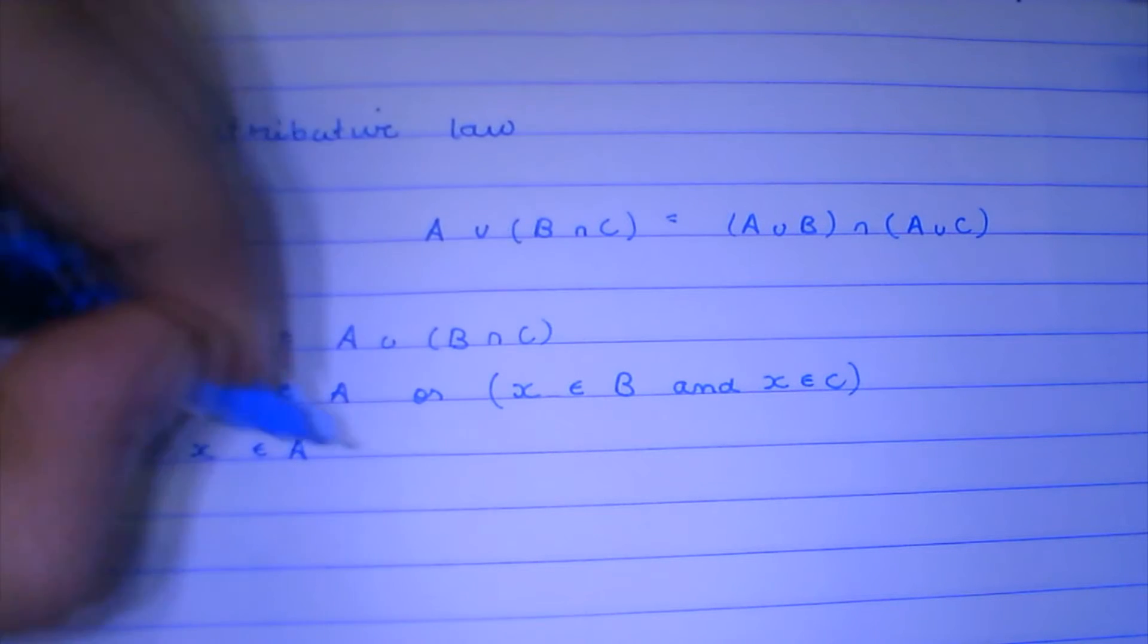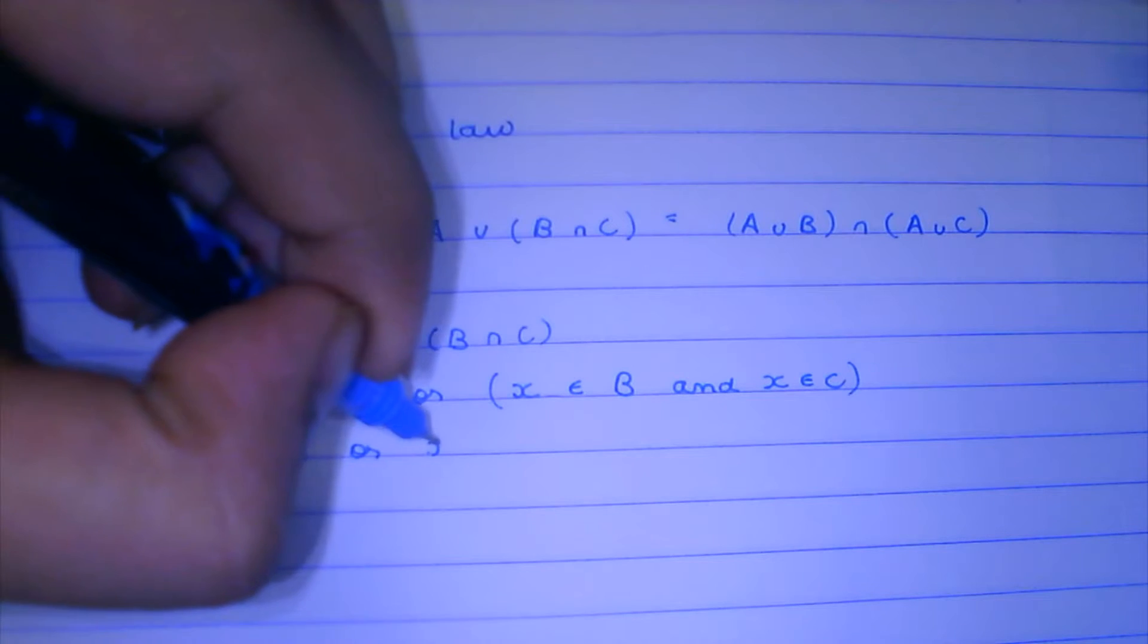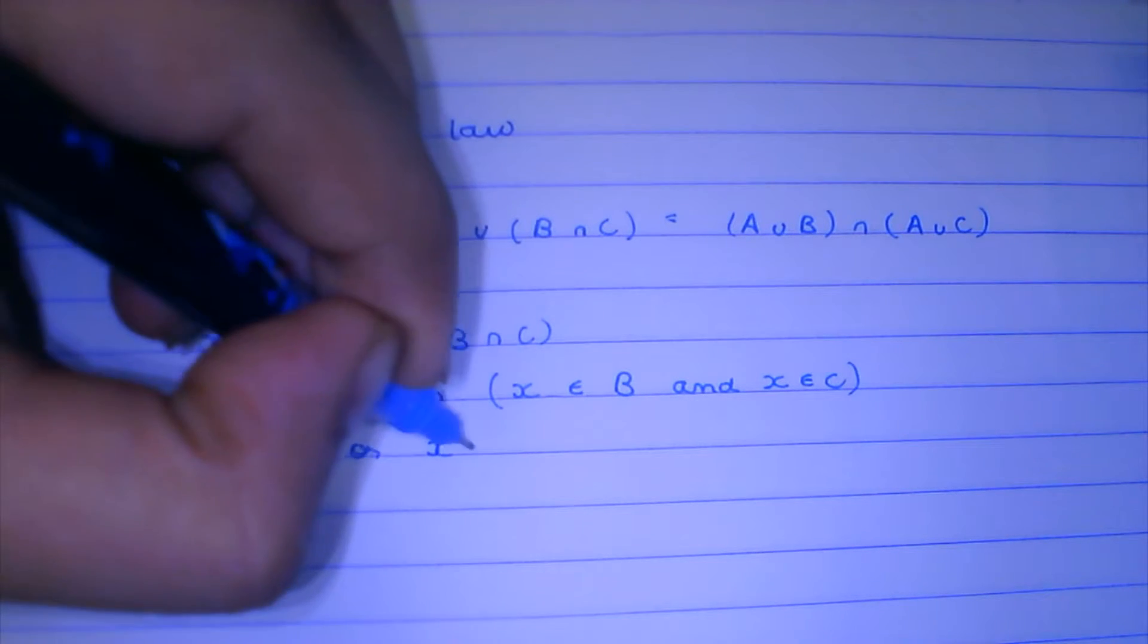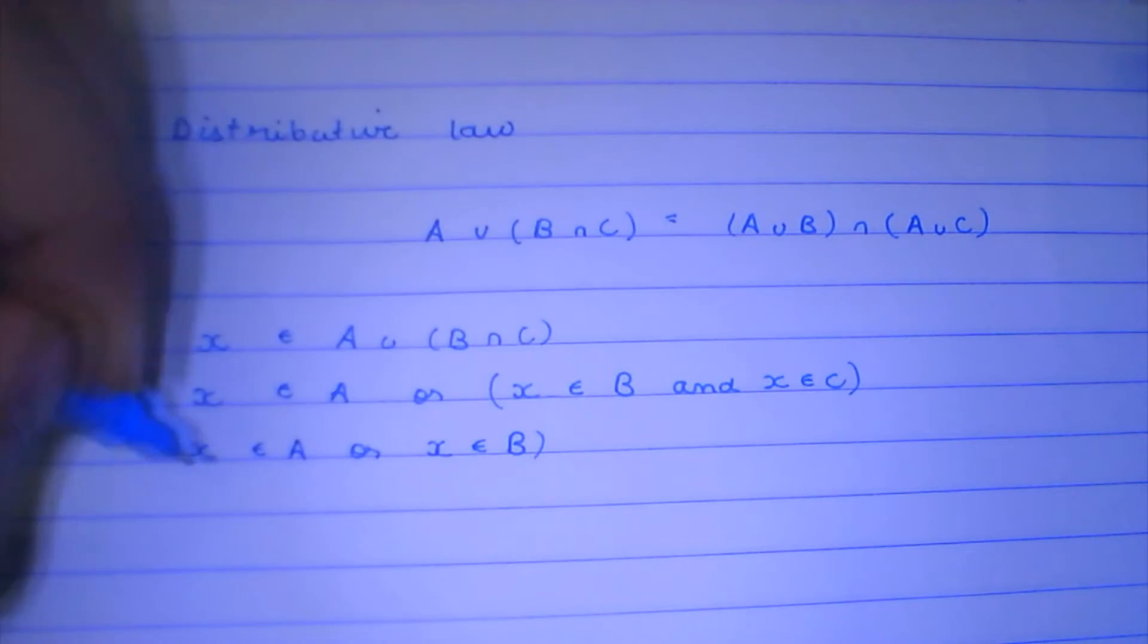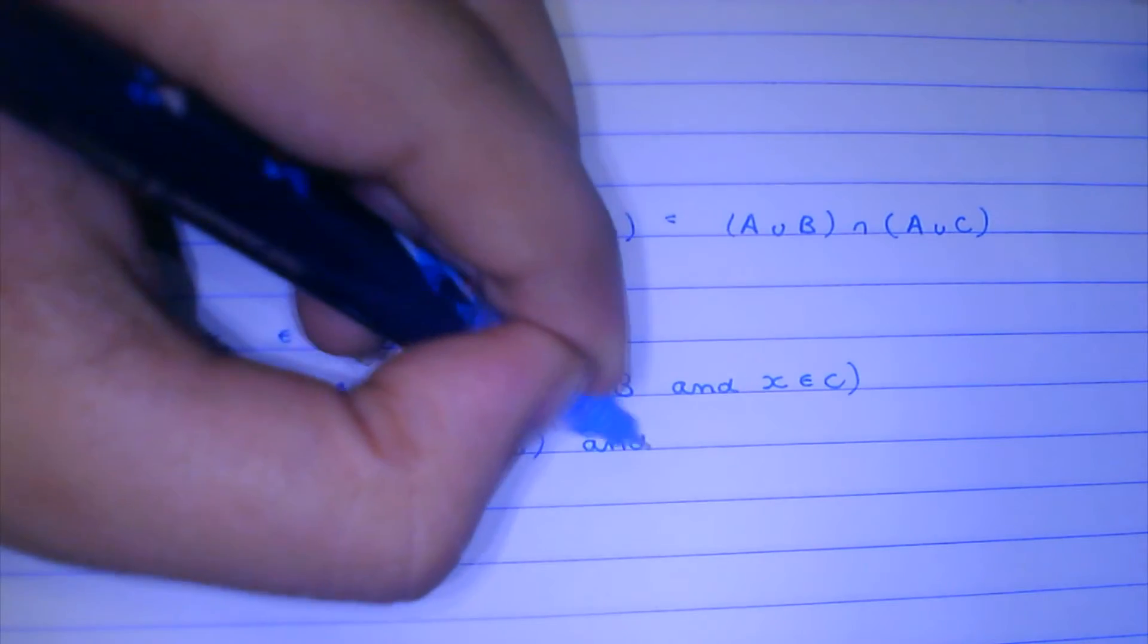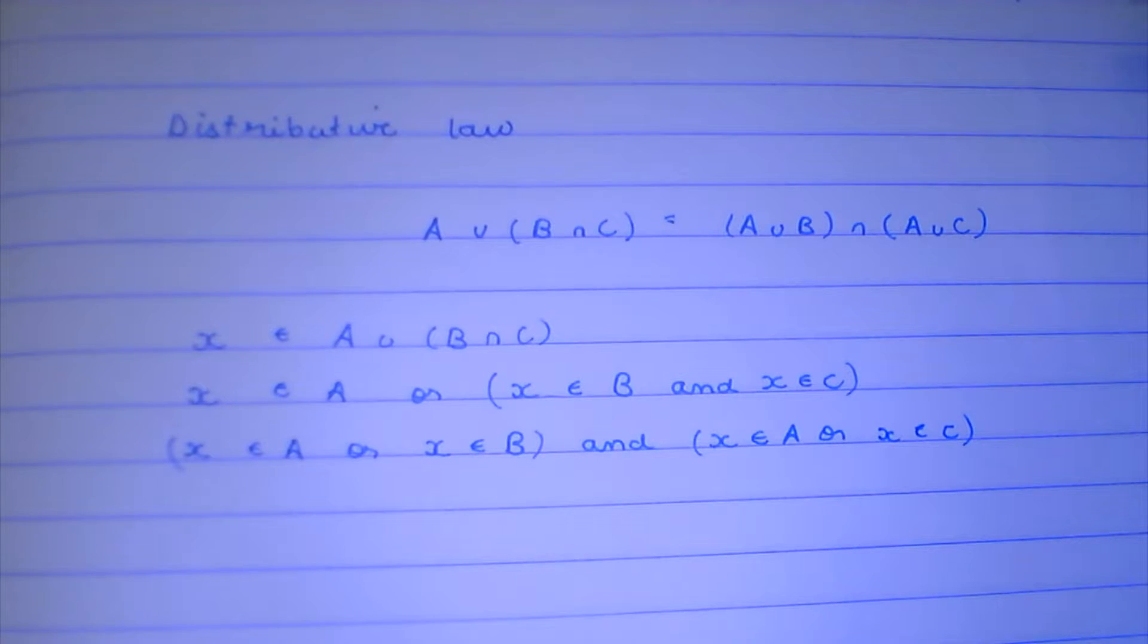A or X belongs to B and X belongs to C. And this means that X belongs to A or X belongs to B, and X belongs to A or X belongs to C.